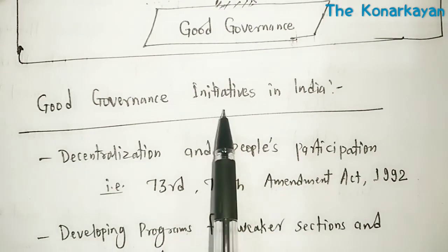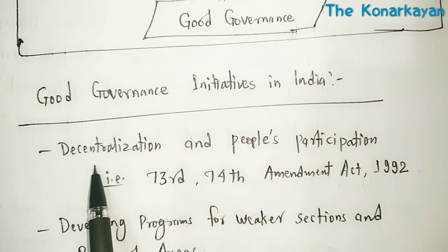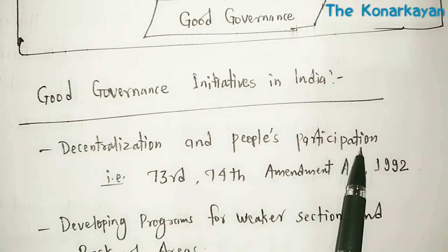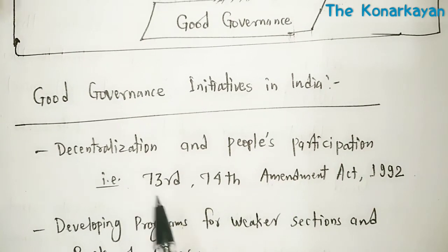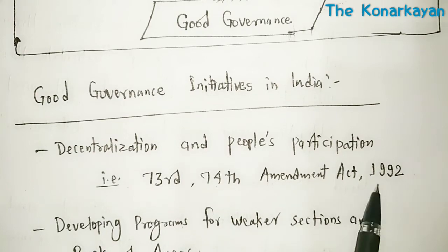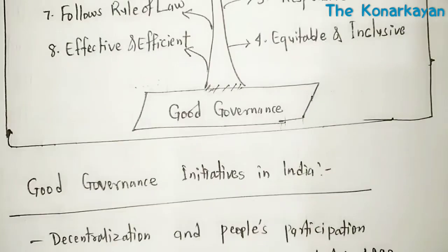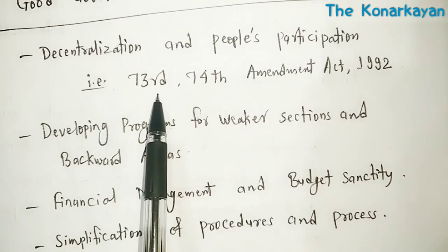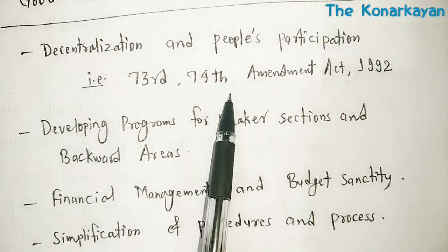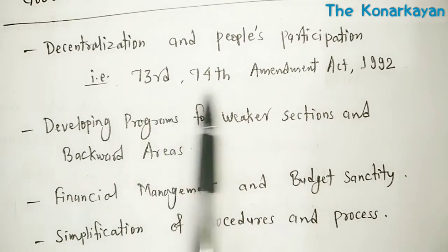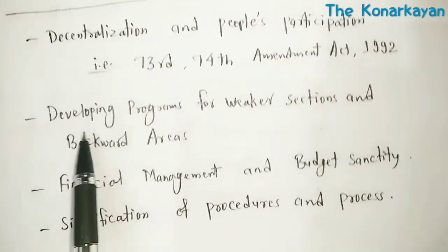Good governance initiatives in India. First is decentralized and people's participation, such as the 73rd and 74th Amendment Acts of 1992. The 73rd Amendment Act introduced Panchayati Raj, and the 74th Amendment Act introduced municipalities. This is an example of decentralization and people's participation.